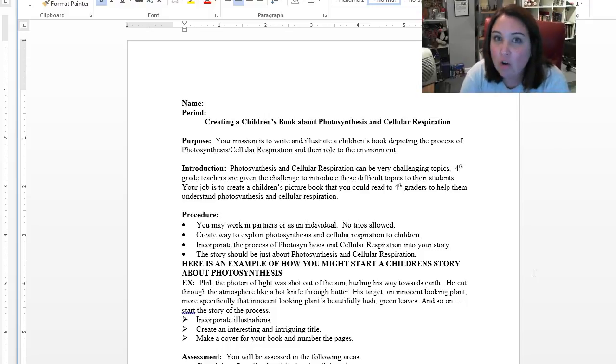But in the long run, it's not really put together too simply. So here is your project. You're going to create a children's book about photosynthesis and cellular respiration. You may have to do a little bit of research on this, but basically it says photosynthesis and cellular respiration can be very challenging topics. Fourth grade teachers are given the challenge to introduce these difficult topics to their students. Your job is to create a children's picture book that you could, you theoretically, could read to fourth graders.